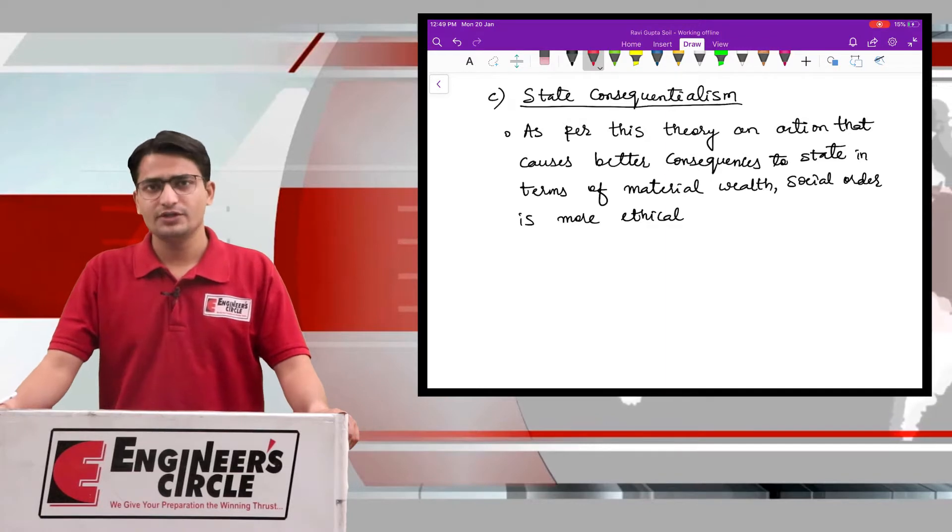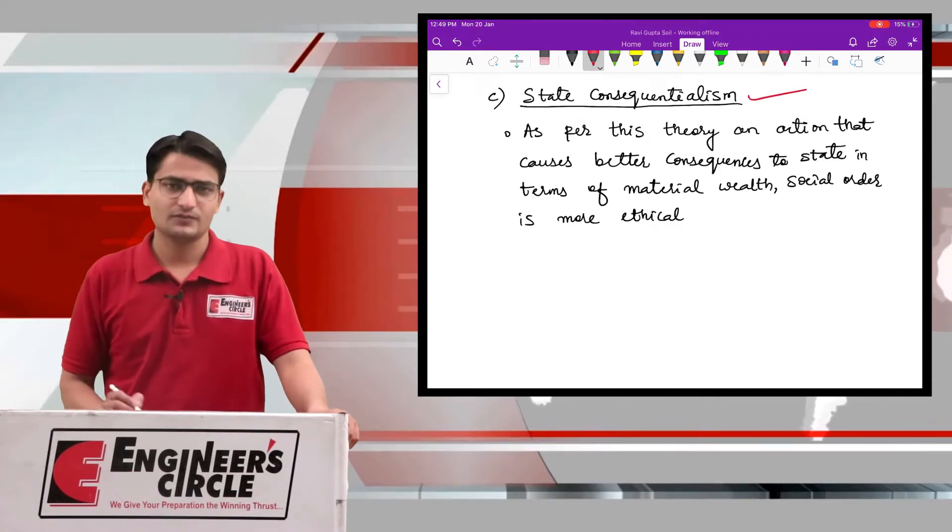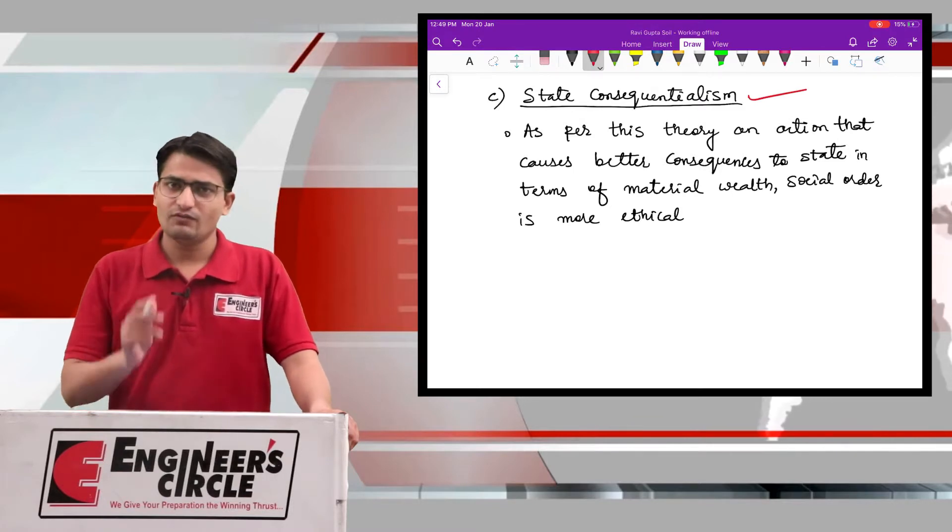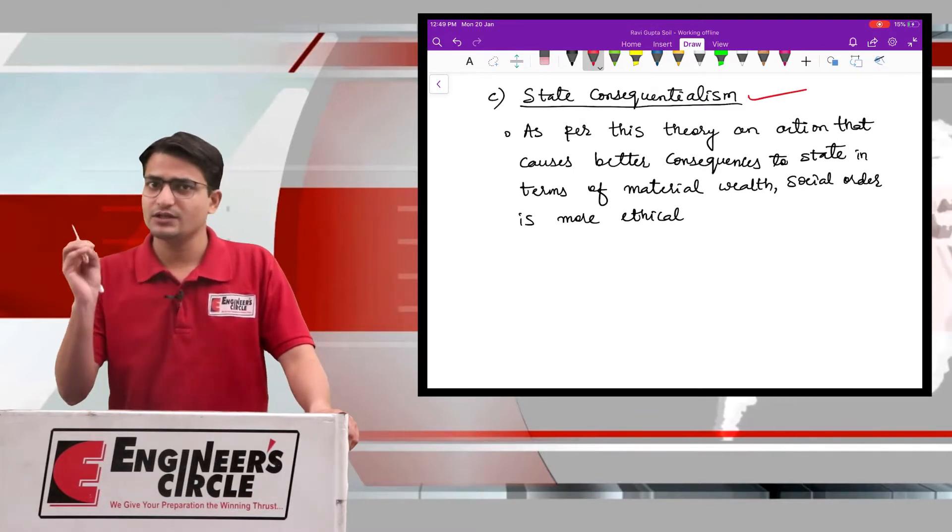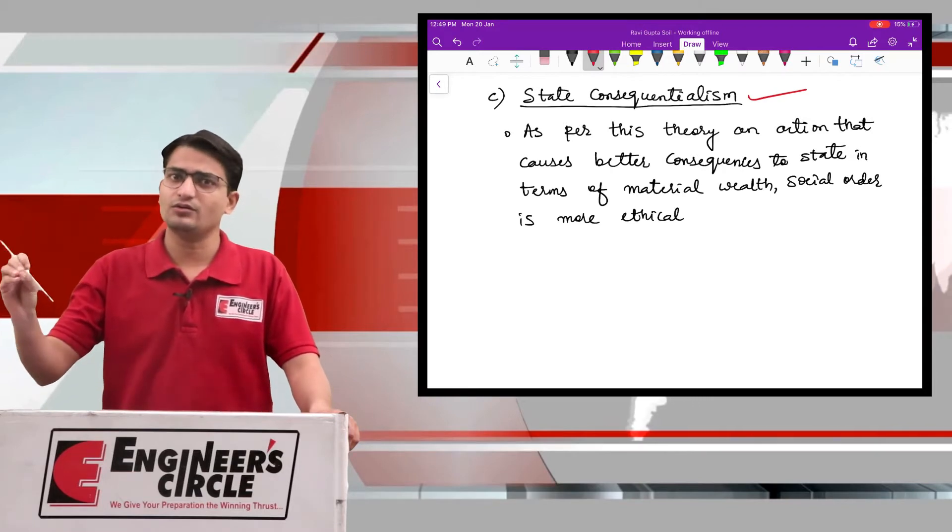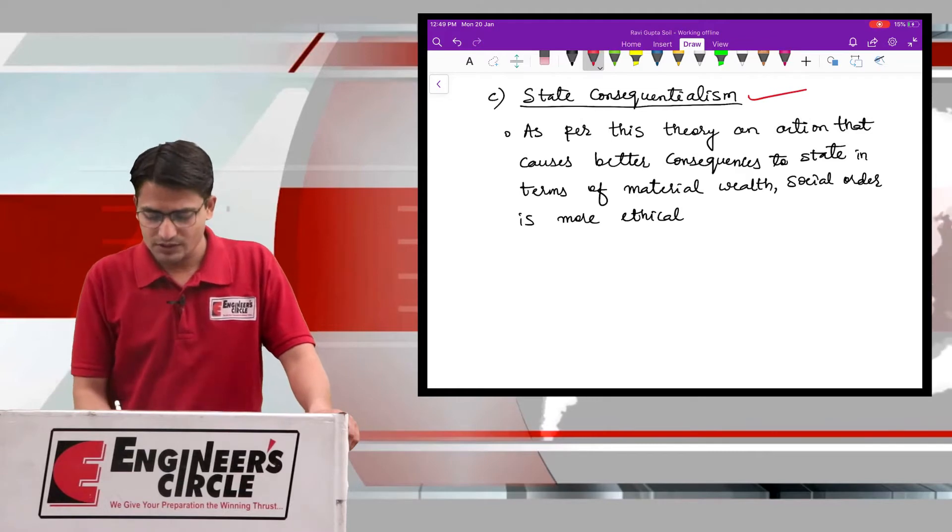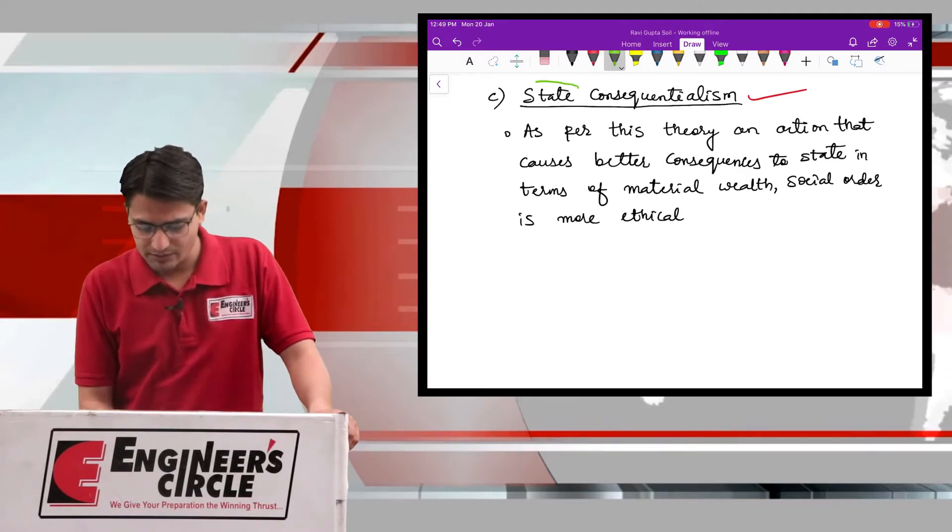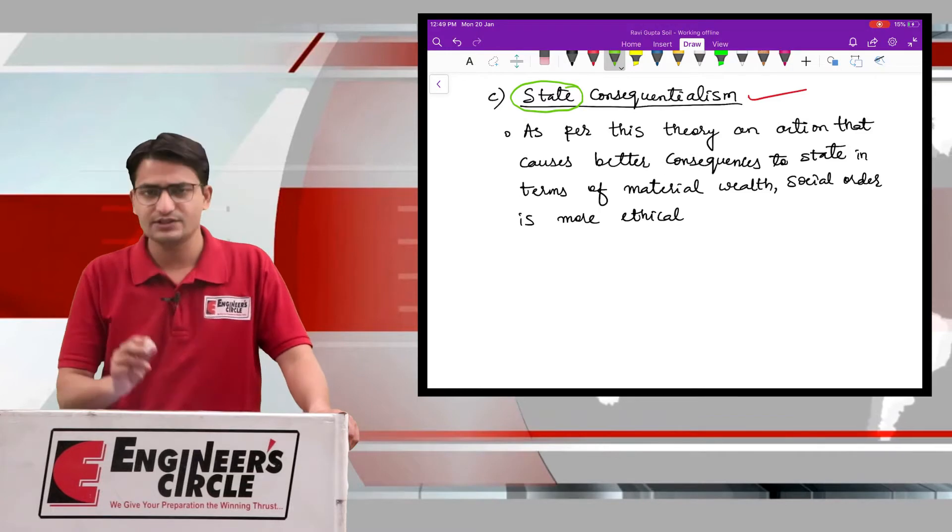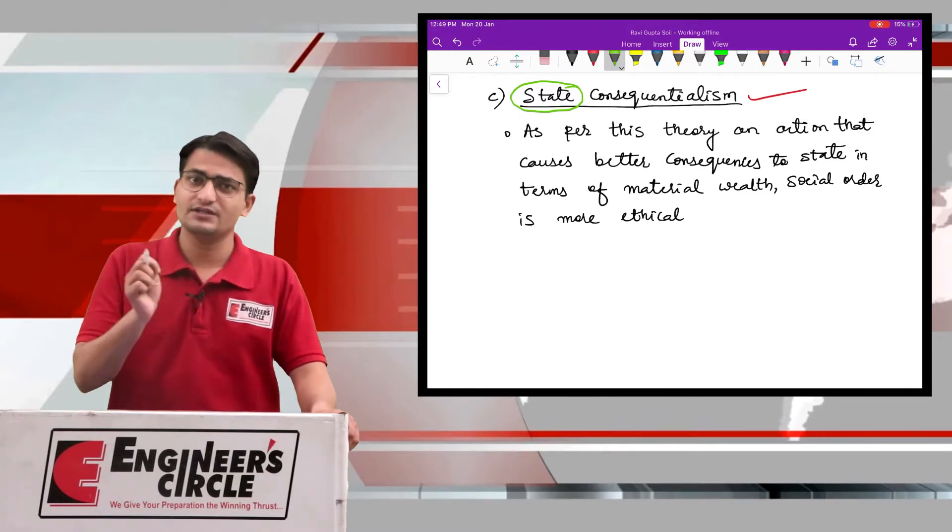The third branch of teleological ethics is state consequentialism. We have already understood that teleological is a consequentialist approach that talks about the consequences of your action. This theory, in the name itself, is suggesting that it is concerned with the consequences or the outcomes for the state.